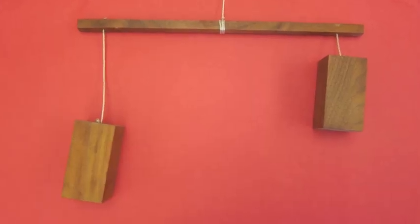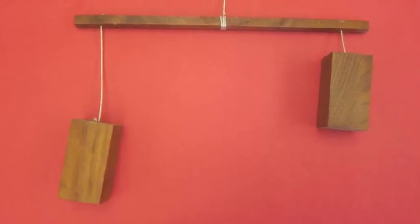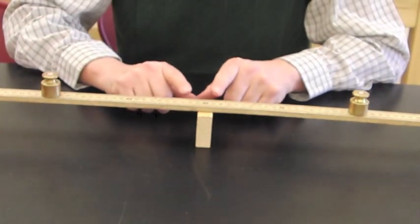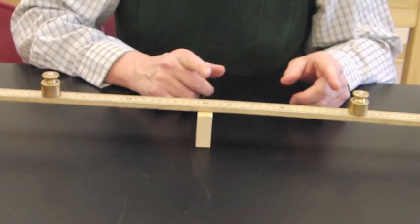Here's an example of equal weights. It doesn't matter that they're not hanging down the same length. The same weights are the same distance away from the fulcrum, so this would become balanced.